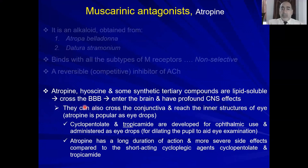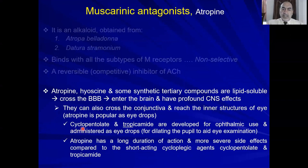Tertiary amines can also cross the conjunctiva — they need to be lipophilic to pass through the conjunctiva and reach inner structures of the eye. That is why atropine is popular as eye drops, along with other short-acting drugs such as cyclopentolate and tropicamide, which will be discussed later.